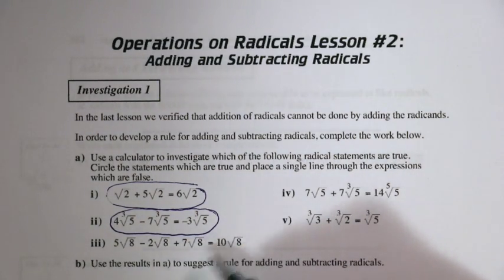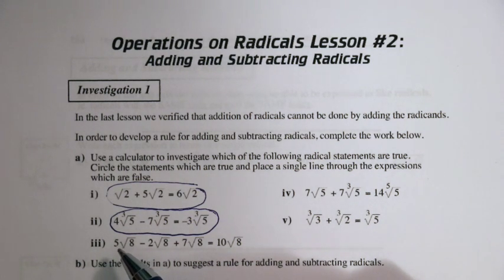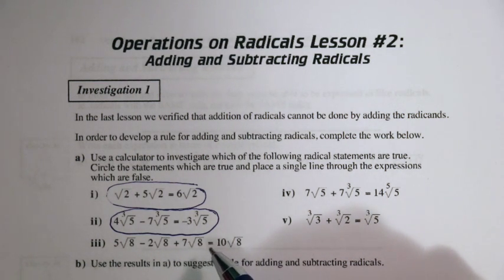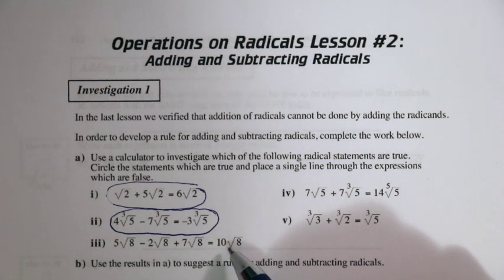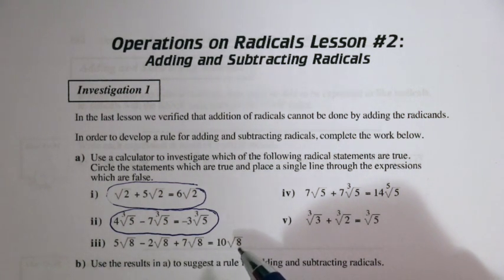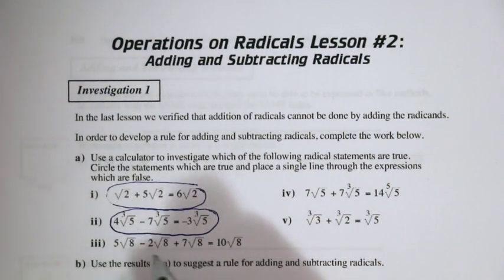Let's take a look at this one: we have five square root eight minus two square root eight plus seven square root eight, and that does actually equal ten root eight. We would check this in a calculator and see that all the decimals are the same. So this is also true.